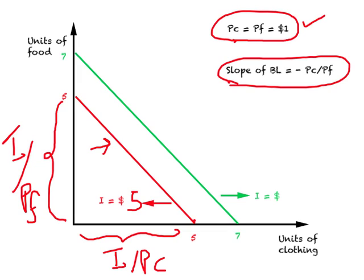Now suppose you are given the green budget line, and the price of clothing still equals the price of food at $1. How much income is implied by this green line? It will be $7. So what this tells us is that, given prices, the further away the budget line is from the origin, the higher will be the real income. Just keep this in mind.